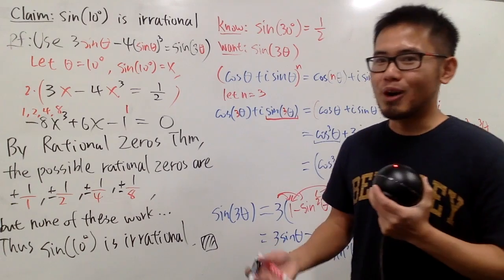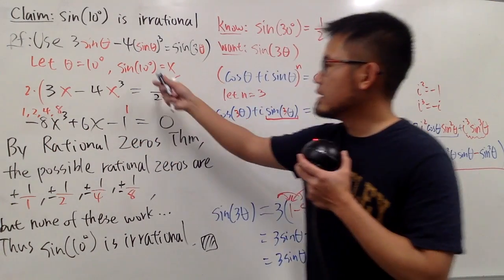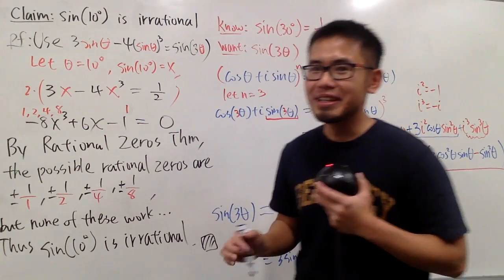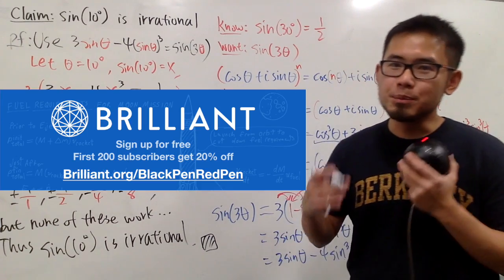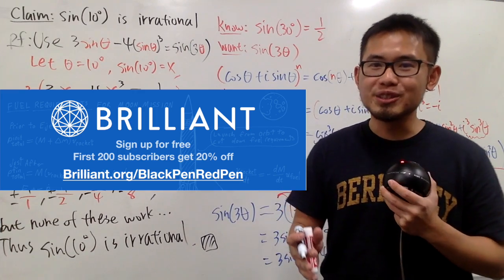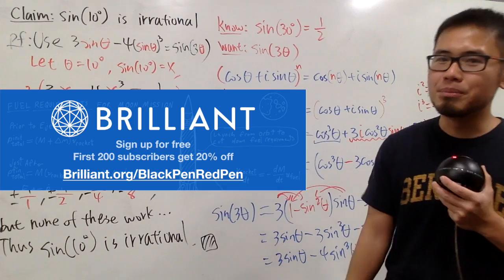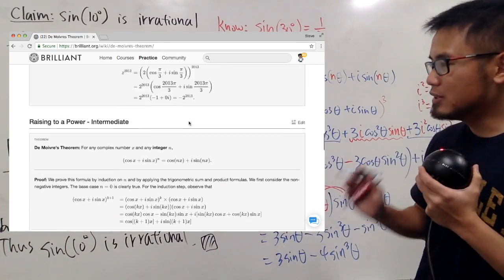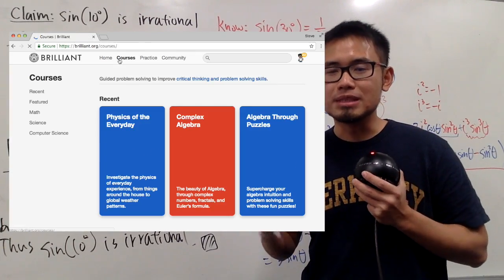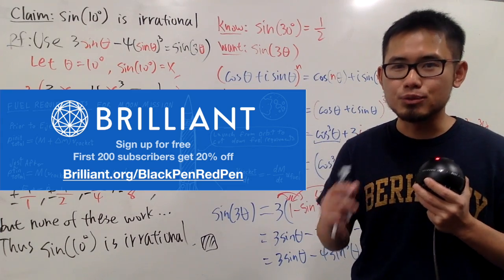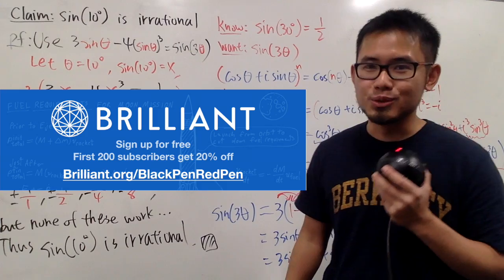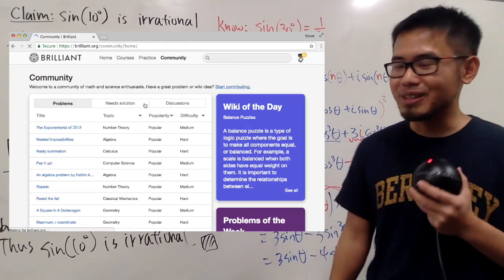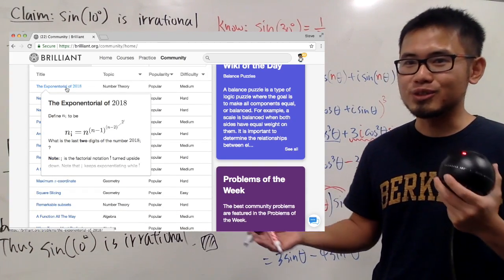A few remarks: we ended up with a cubic equation, and sine of 10 degrees satisfies it. We also have the cubic formula that can solve this cubic equation — I'll do that in a future video. Thanks to Brilliant.org for sponsoring this video. If you don't know about Brilliant.org, I highly suggest you check it out at brilliant.org/blackpenredpen. It has a lot of great lessons and interesting topics. Sign up for annual premium and get 20% off if you're one of the first 200 to subscribe.